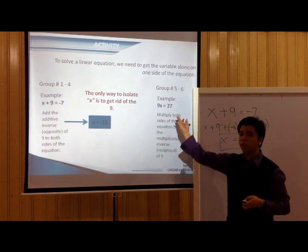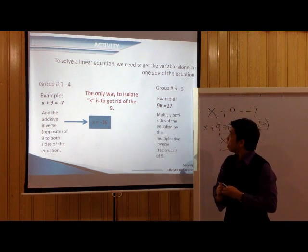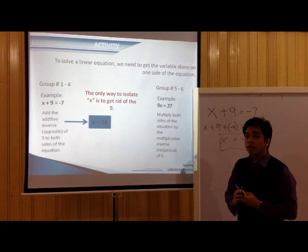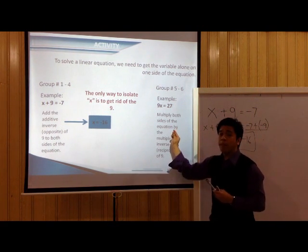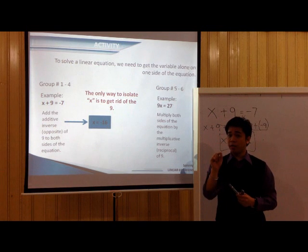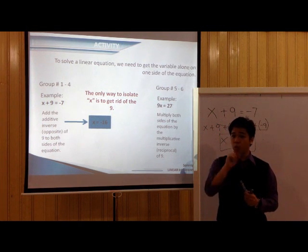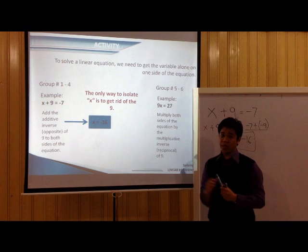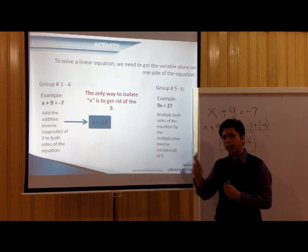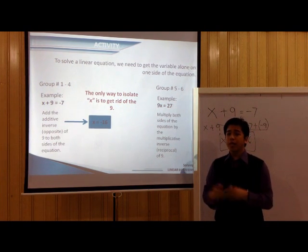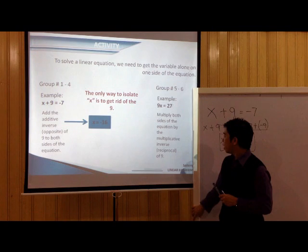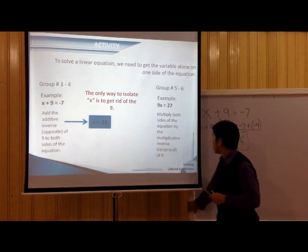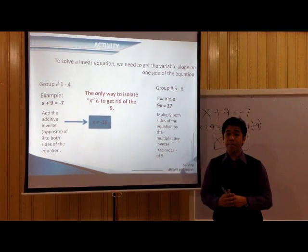Now, let's try to look at the second example: 9X equals negative 7. Again, you have to make sure that your variable is alone on one side of the equation. The problem is, we have 9 here. We can get rid of that 9 by applying what you call the Multiplication Property of Equality, or the MPE.